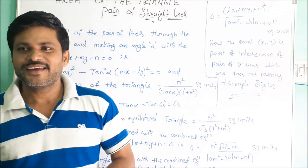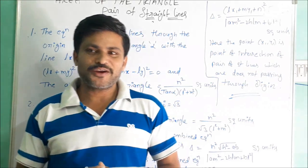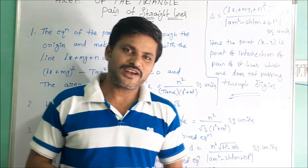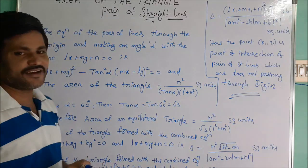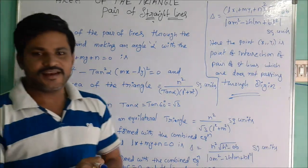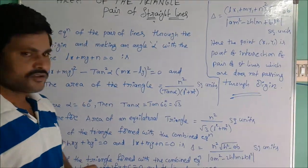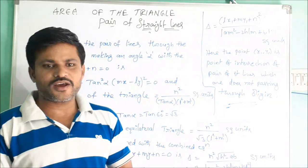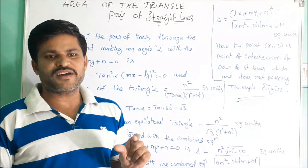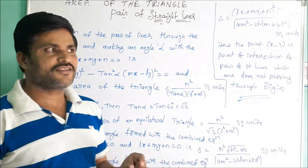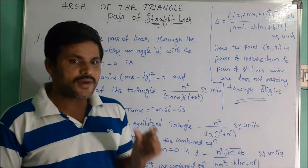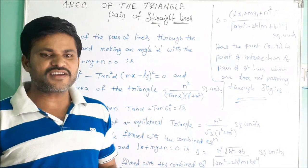Good afternoon everybody, welcome to Sri Ganitvijan Sarvasvam. This is B. Ramesh Kumar. Today we discuss the topic pair of straight lines — specifically how to find the area of the triangle in different forms. First of all, before going to area of the triangle, we find the combined equation of pair of straight lines passing through the origin making an angle alpha with the given straight line.